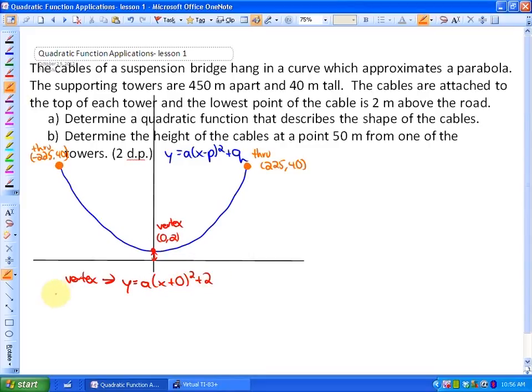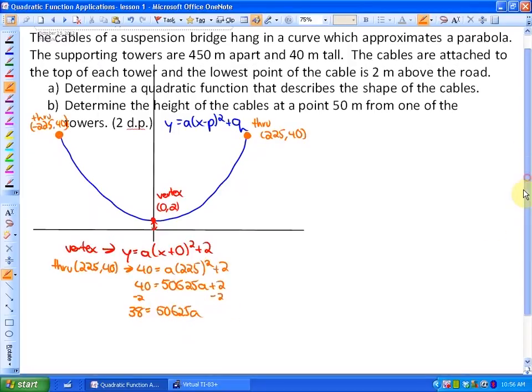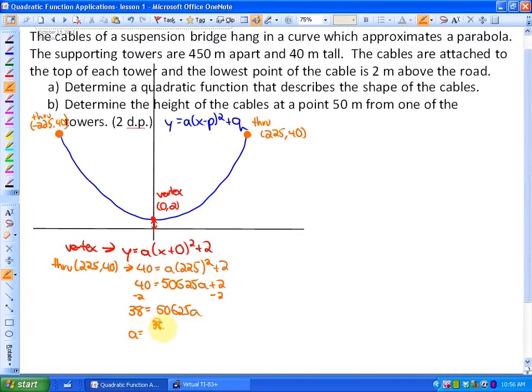And using either of our through points, I'm going to use the through point 225 and 40, we can find our value for a. So 40 equals a times 225 squared plus 2, 225 squared is 50,625, and then plus 2, subtract 2, and we have 38 equals 50,625 a. So we'll finally get a value of a of 38 over 50,625.